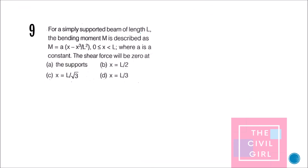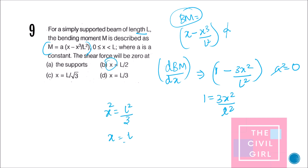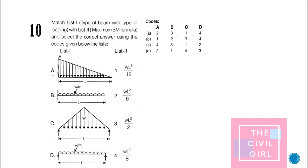Next question: for a simply supported beam the bending moment equation is given as M = a·(x − x³/l²), where a is a constant. At what point is the shear force zero? Differentiating M with respect to x and setting it to zero gives x = l/√3. The answer is option C.